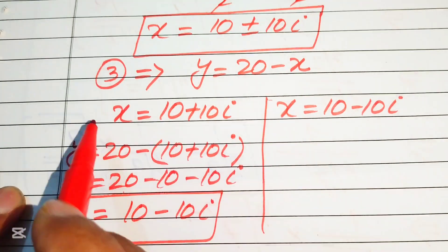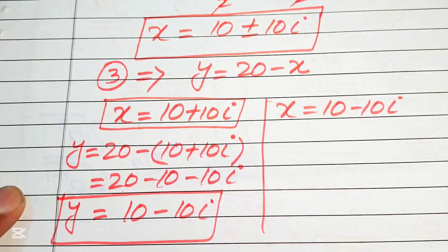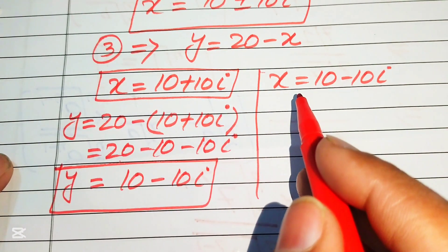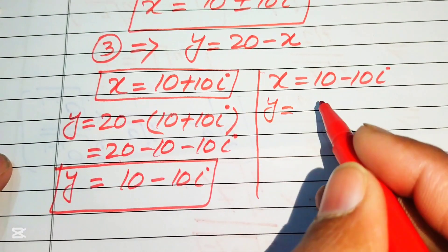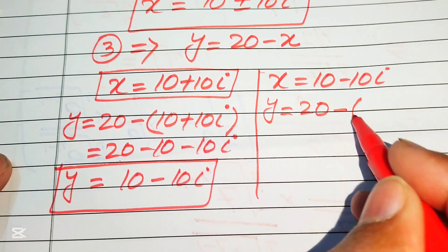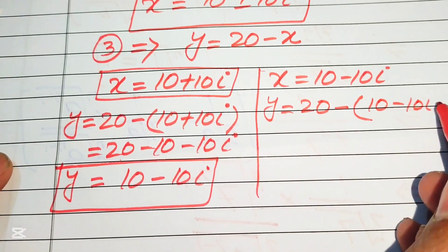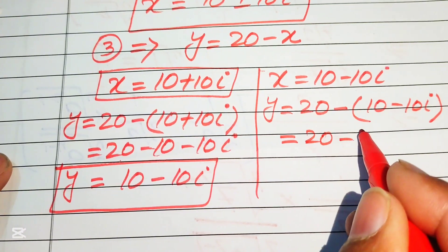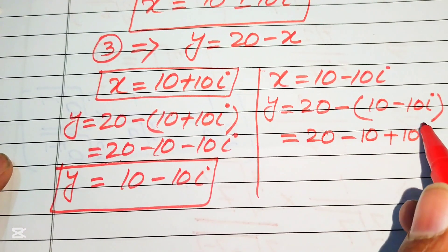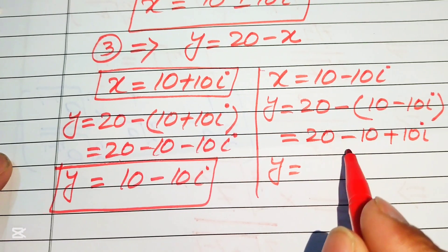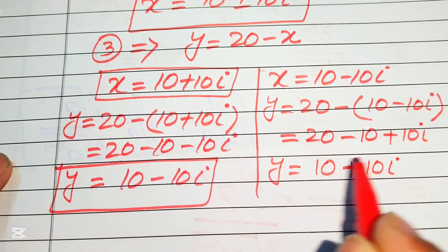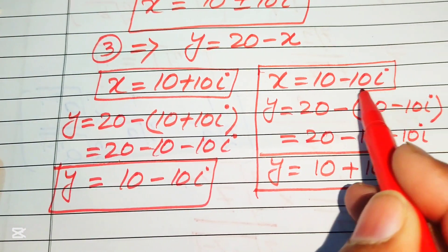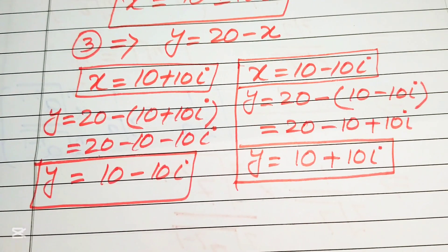For the second case, x equals 10 minus 10 iota, so y equals 20 minus (10 minus 10 iota). Distributing the negative sign gives 20 minus 10 plus 10 iota, so y equals 10 plus 10 iota.